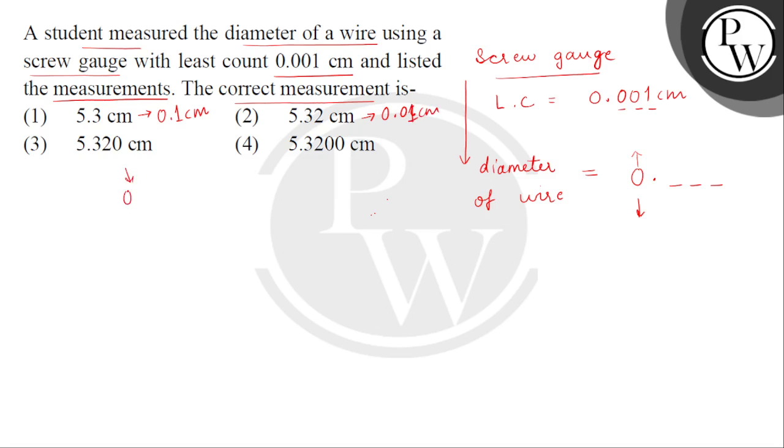Third option ke liye hoonna chahi 0.001 cm. And fourth option ke liye because up to 4 decimal places hai, tho instrument ka least count hoonna chahi up to 4 decimal places.